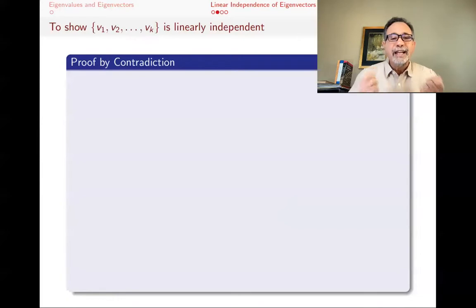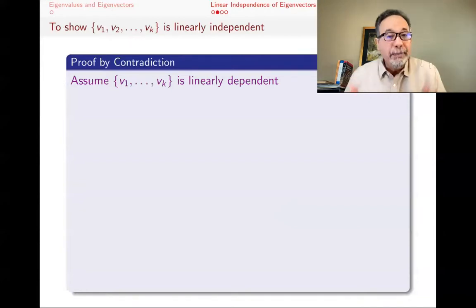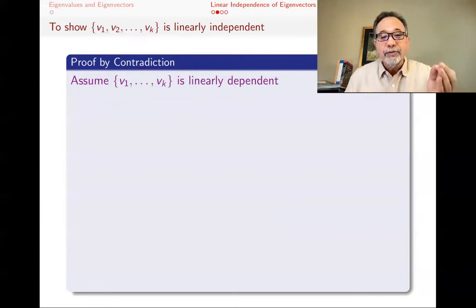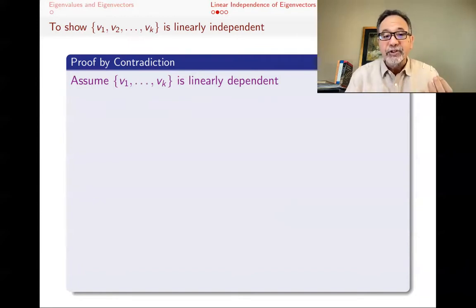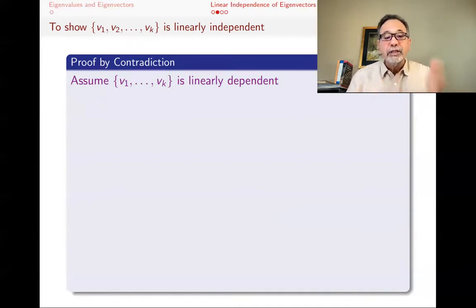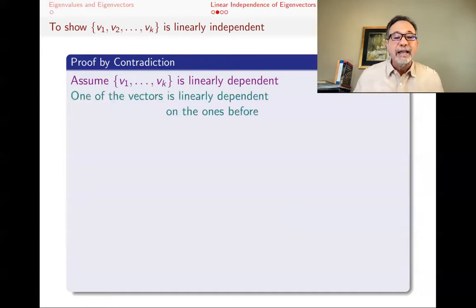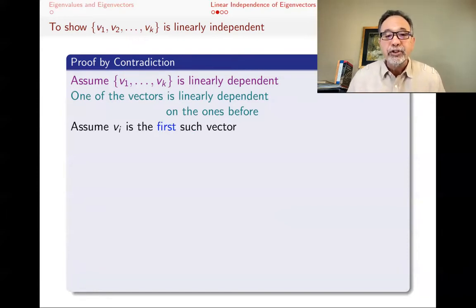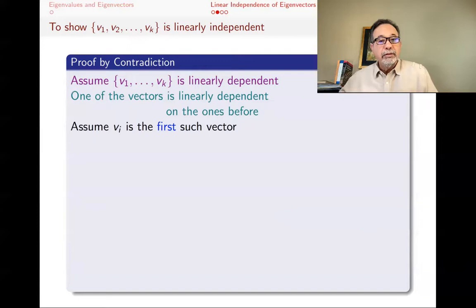We assume the set is linearly dependent. When a set is linearly dependent, either the first element is the zero vector — but eigenvectors are by definition never zero — or at some point one vector is a linear combination of the ones before it. So let V_i be the first such vector in the list that is a linear combination of V_1 through V_{i-1}. This means V_1 through V_{i-1} are linearly independent, and V_i equals alpha_1 * V_1 + alpha_2 * V_2 + ... + alpha_{i-1} * V_{i-1}.